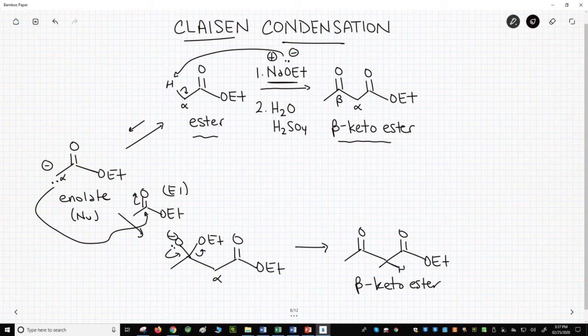This product does form in the reaction, which happens to be full of base. Beta-keto esters are weakly acidic. These protons between the two carbonyls have a pKa of around 12. Even though we don't want one of them to be deprotonated, sodium ethoxide will remove one of these protons to form a new enolate.